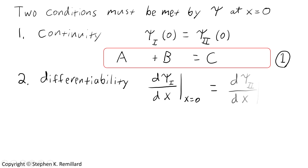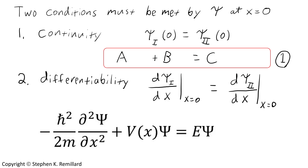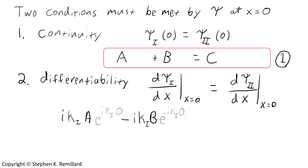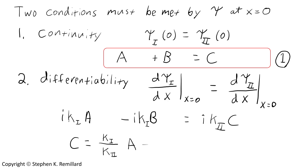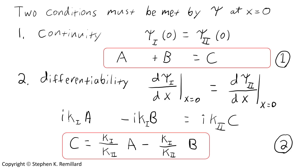The second condition is differentiability of the wave function at the interface. The Schrödinger equation contains the second derivative of the wave function, so if the wave function is not differentiable, the derivative is infinite and the Schrödinger equation is undefined, which would be unphysical. To have a valid solution, you need a defined derivative at the interface, requiring differentiability across it. Differentiating the two wave function expressions and evaluating at x equals zero gives a new expression, which we rearrange for c in terms of a and b and call equation two.